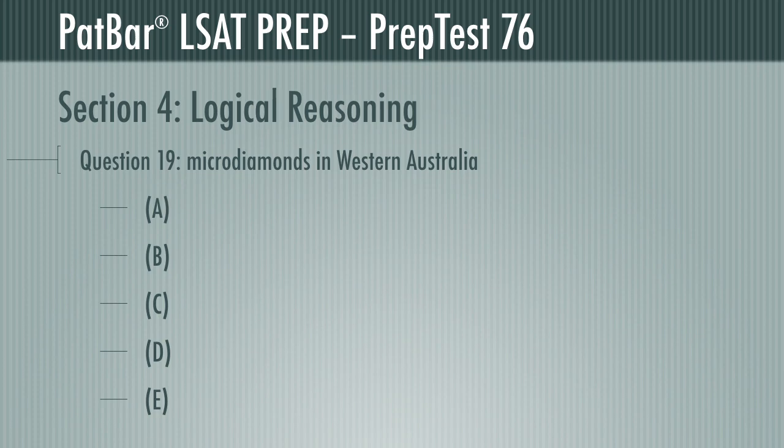Question 19 presents the discovery by researchers of microdiamonds in Western Australia and calls them the oldest fragments of the Earth's crust that have thus far been identified. The passage says that these microdiamonds were formed more than 4 billion years ago, only 300 million years after the Earth was formed, so their discovery tells us something about how long it took our planet's crust to form.